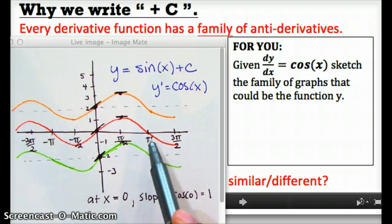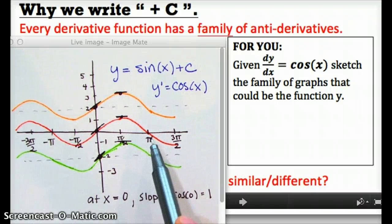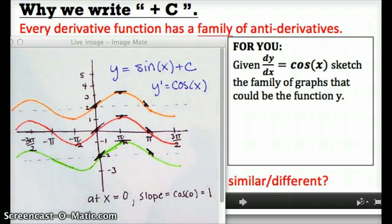We could do the same thing at pi. Cosine of pi is negative 1, and sure enough, each of these functions has a tangent slope, if I sketch it here, that looks like negative 1.